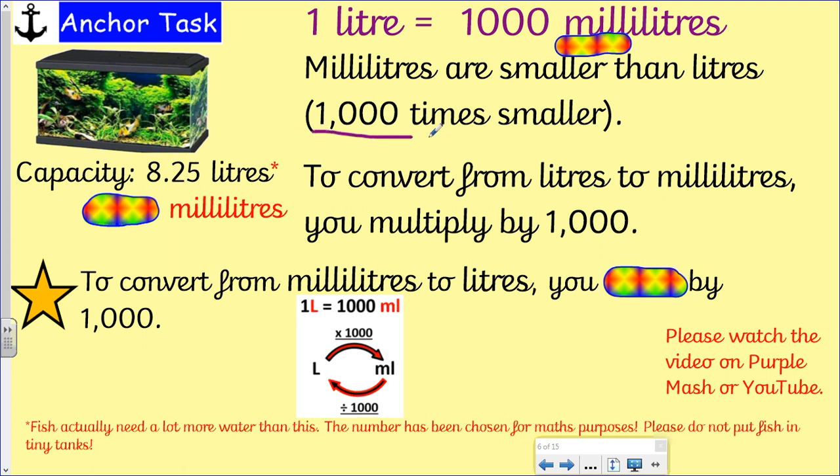So if we've got litres, which is what we have over here, and we want to convert it into millilitres, we need to multiply by 1000. So to convert from litres to millilitres, we multiply by a thousand. We'll do that bit first before we look at the next bit.